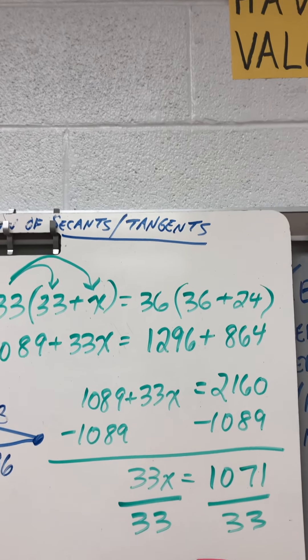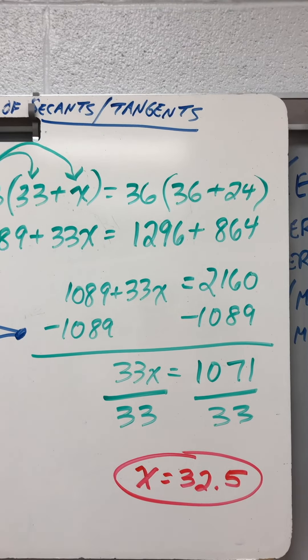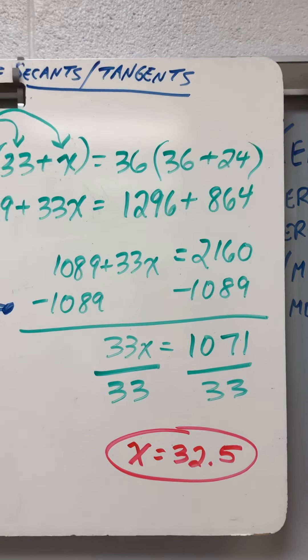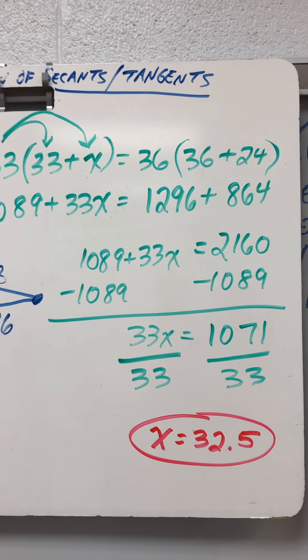Minus 1089 from both sides. You divide by 33, and you get 32.45 repeating. So you round that to the nearest tenth, 32.5.